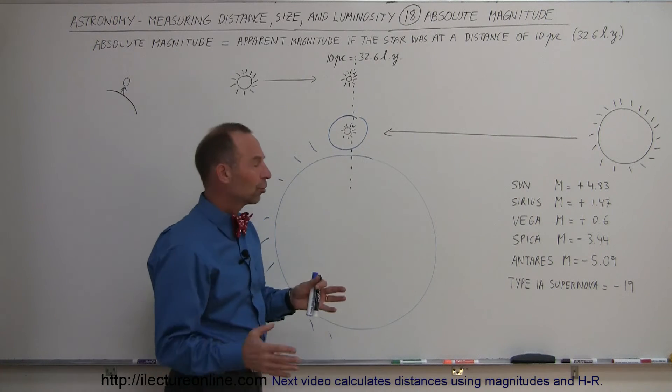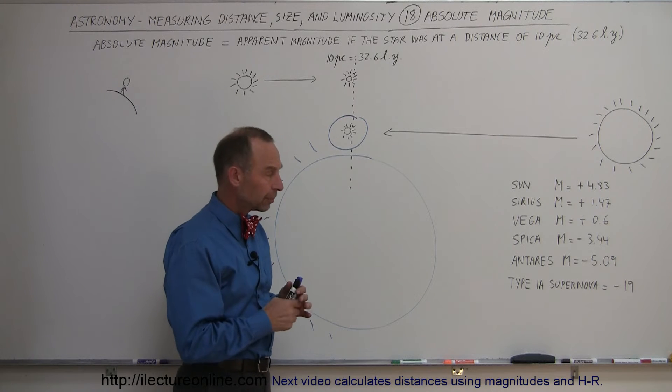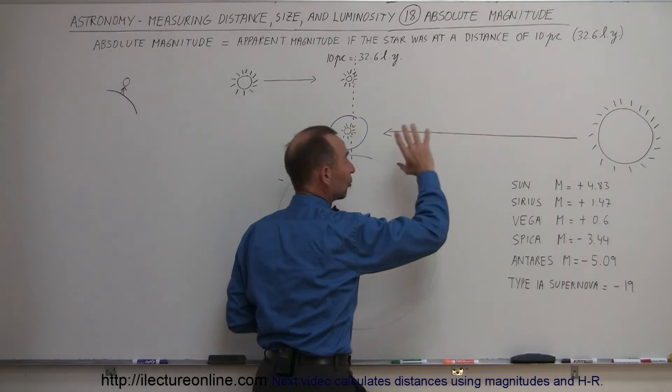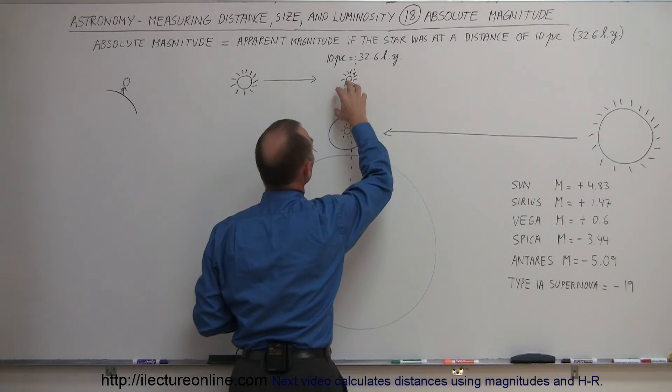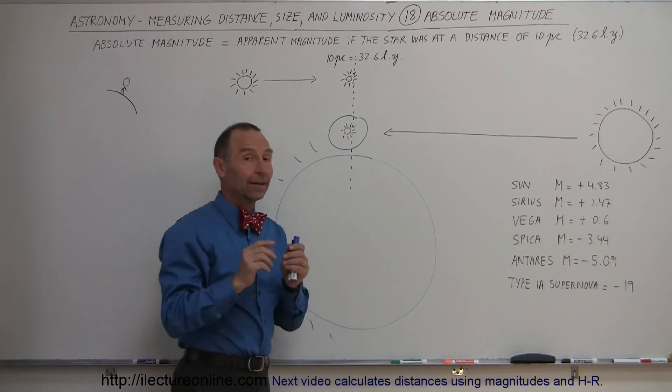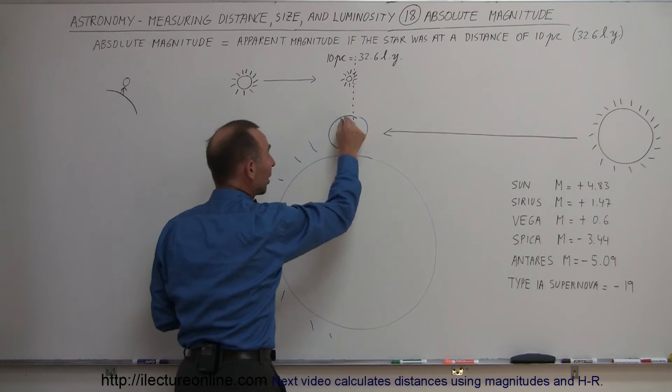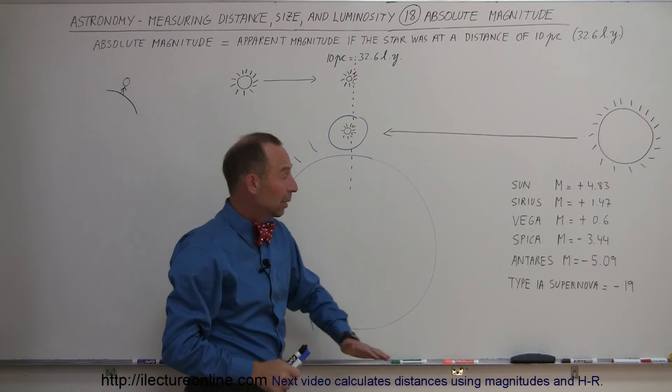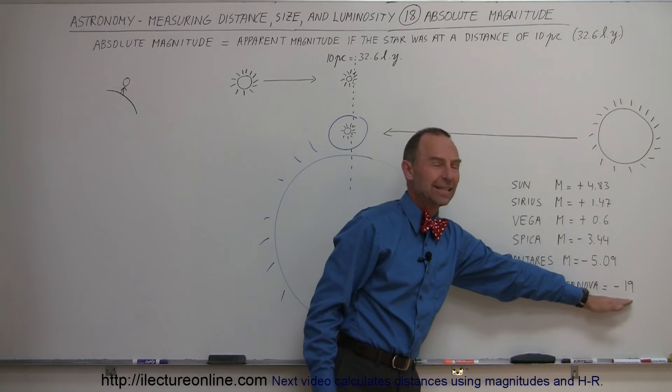Now, of course, most supernova explosions, they're really far away. But imagine if one happened at a distance of 10 parsecs. If a supernova explosion were to happen at 32.6 light years, a distance where if our sun was there, only would have a brightness of 4.83, barely visible, it would have a magnitude of minus 19.